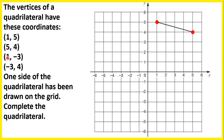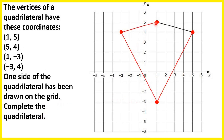And the fourth point is (-3, 4) — so the x axis value is minus 3 and the y axis value is 4. We can plot our fourth vertex here. Now that we've plotted all our vertices, all we need to do is join them up to complete the quadrilateral.